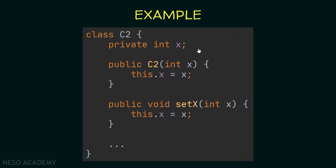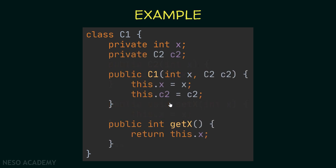Now we have a class C2. Inside this class we also have a private integer x, a constructor, and a setter for x. So immediately we say that the class C2 is not an immutable class — it is a mutable class — because we are able to change the value of the attribute x using this setter.